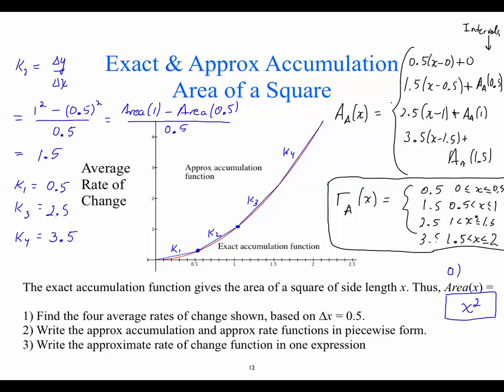Going backwards, the only new thing so far is we've needed the idea of average rate of change to get those segments — based on the constant rates of change to achieve the same change in y for the given change in x. What about writing this approximate rate in one expression? Before, we used step — R of left of X. Can we do that here? No, because we don't have a rate function. We're trying to find the rate function. We can't use that approach for the reverse journey.